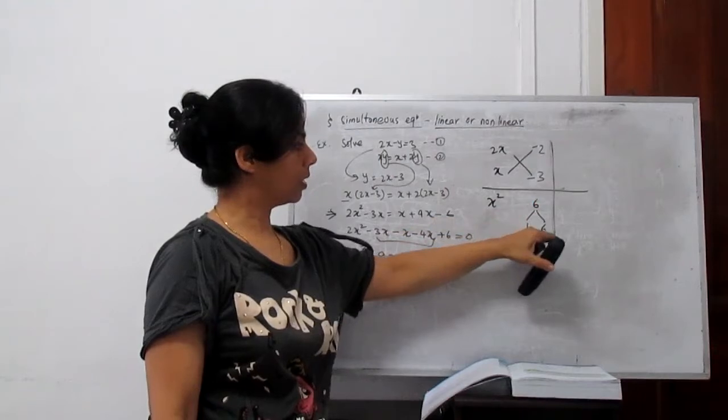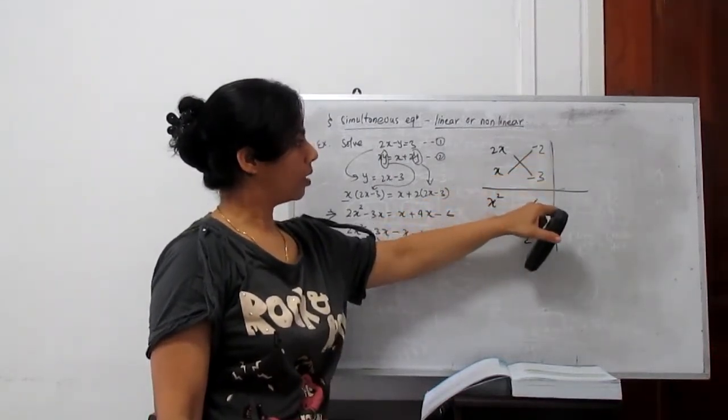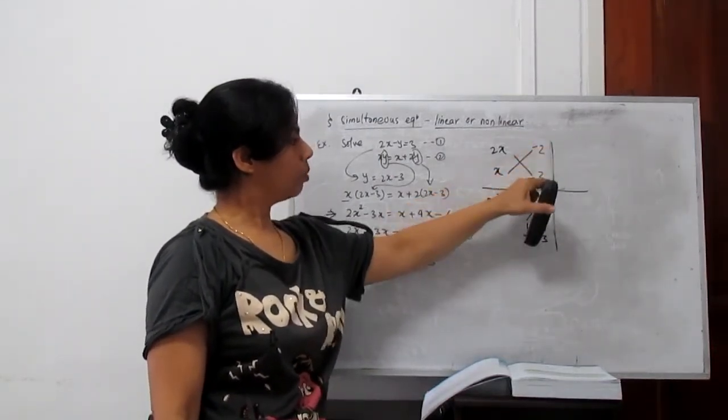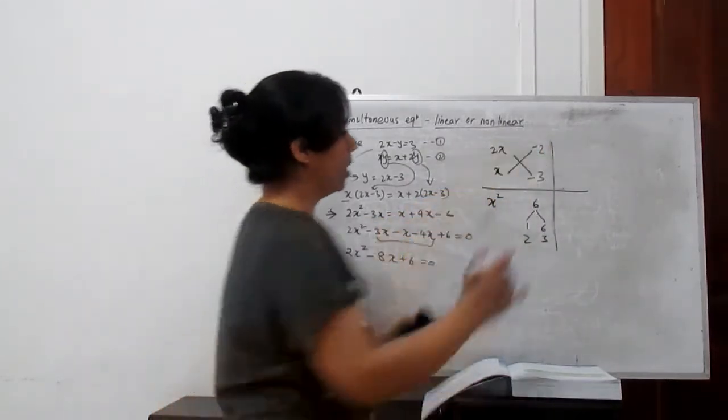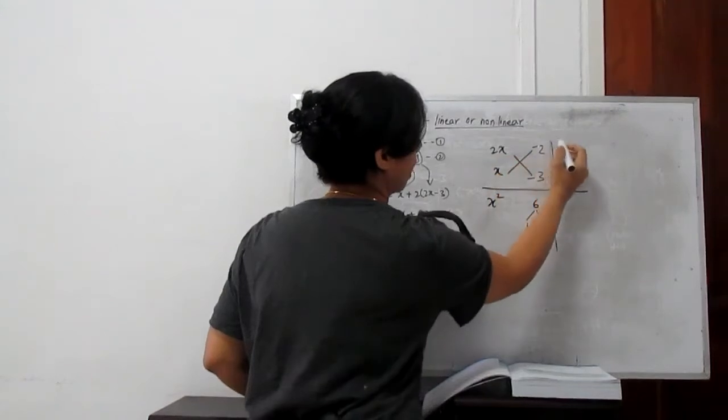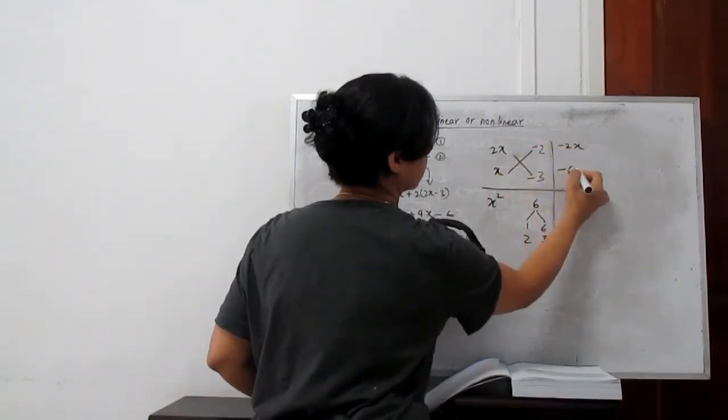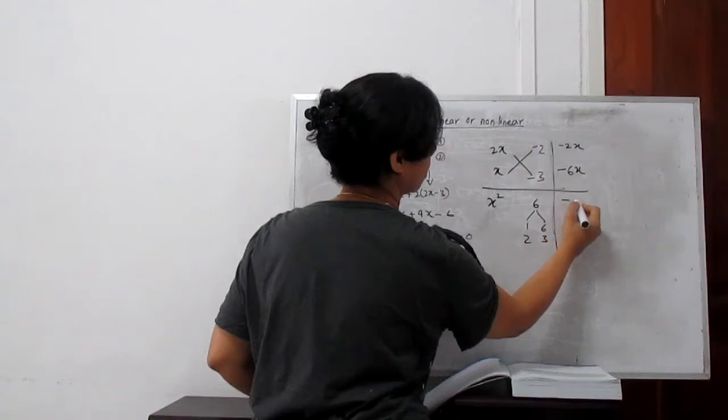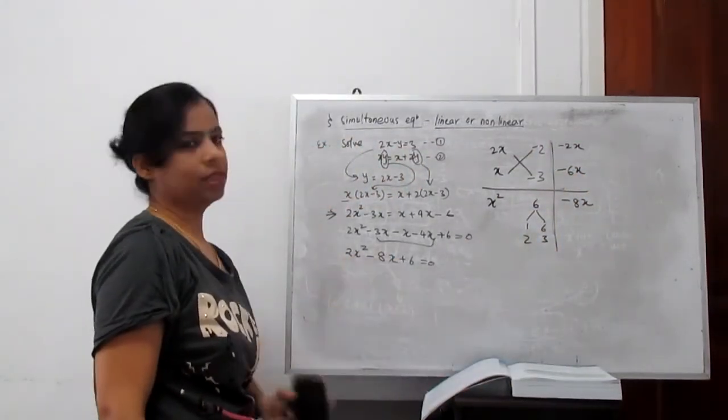Now in cross method, we need to factorize this 6 to get the x value. See, 6. Factor of 6 is 1, 6 and 2, 3. See, 3 and 6. Minus minus becomes plus. And for the factors, now you multiply this. 2 times x is minus 2x. 3 times 2 is minus 6x. This becomes minus 8x. Clear? All three terms match.